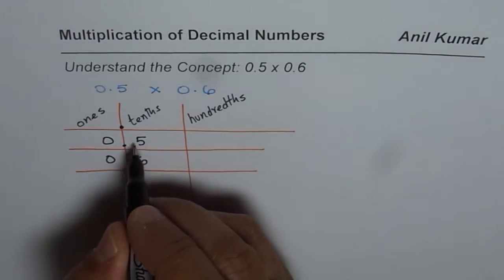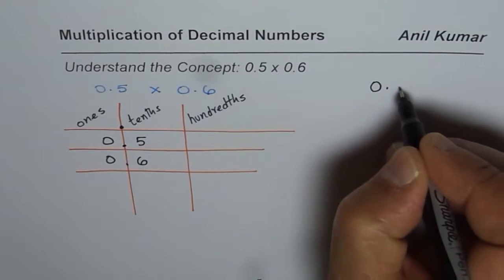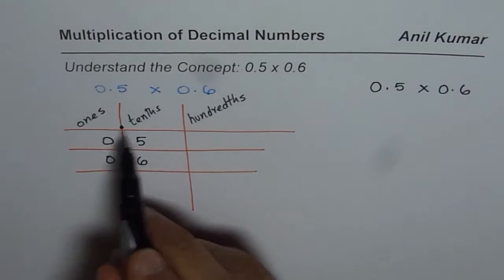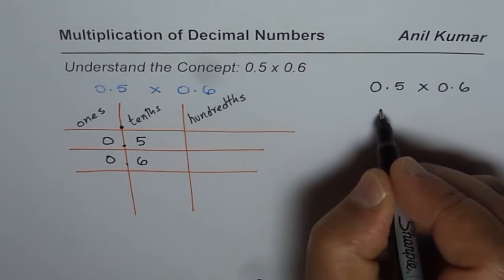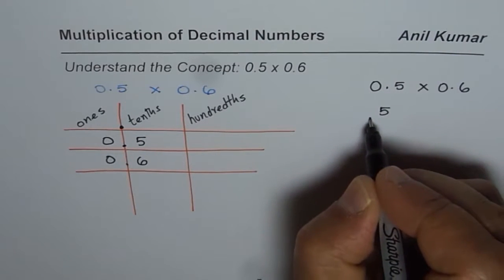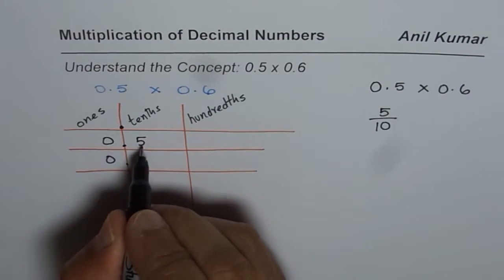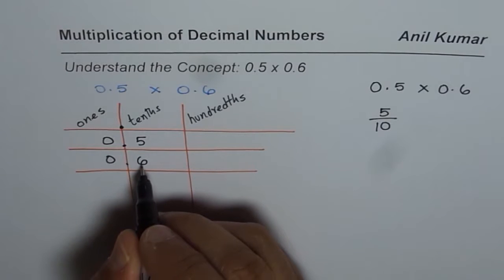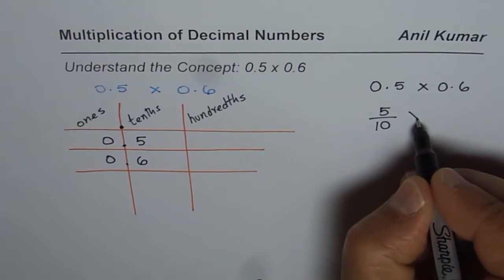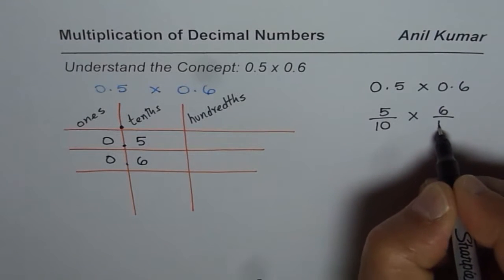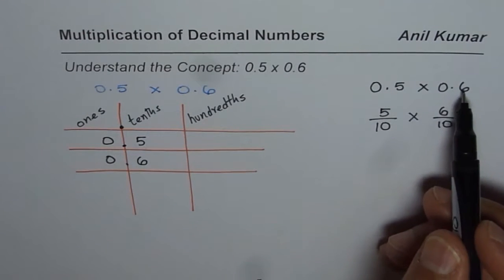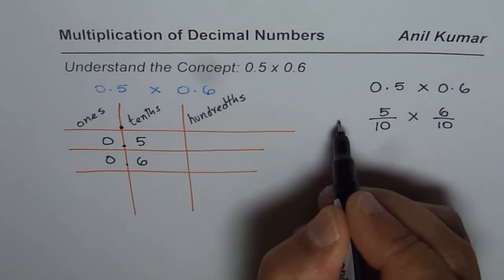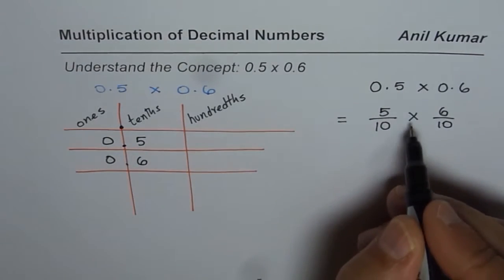So we could say, let me write here now, we are again trying to write 0.5 times 0.6 in a different way. Understanding from here, 0.5 is 5 tenths means 5 out of 10. You see this means 5 tenths. 5 out of 10 is 5 tenths and that one is 6 tenths. So we could write this as 6 out of 10. So 0.6 is 6 tenths, 0.5 is 5 tenths. So 0.5 times 0.6 is equal to 5 out of 10 times 6 out of 10.